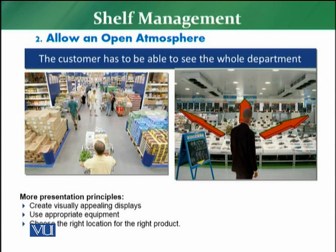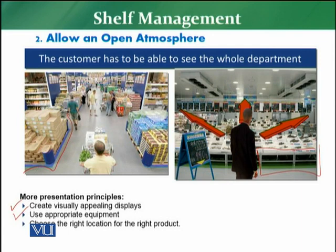Three major powerful presentation principles with respect to this point: first, you need to create visually appealing displays that are attractive to the eyes. Second, you need to use appropriate equipment — for example, a proper palletized area with proper pallets, or proper racks on which fish is displayed. Third, you need to choose the right location for the right product.